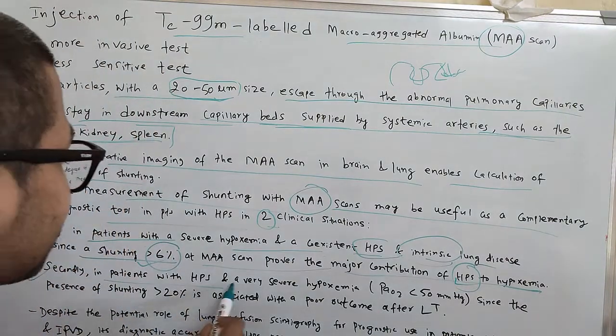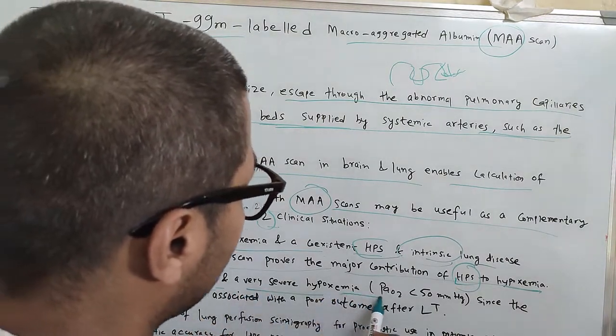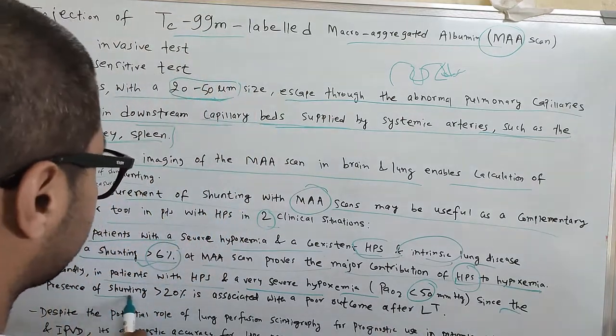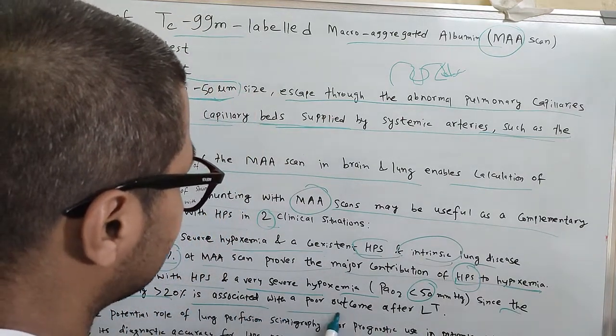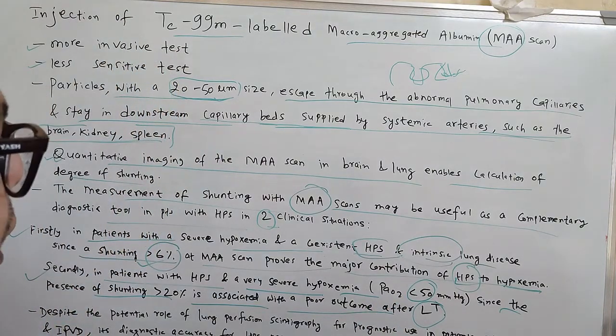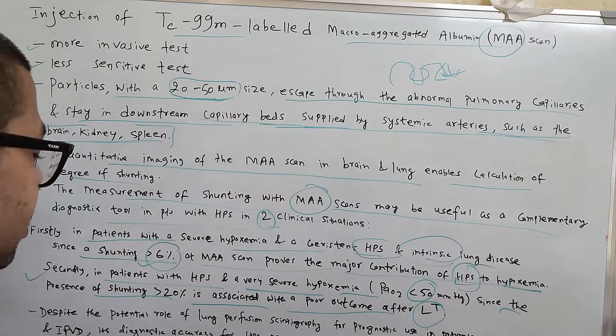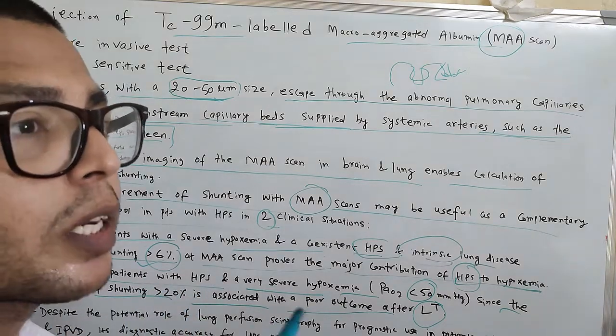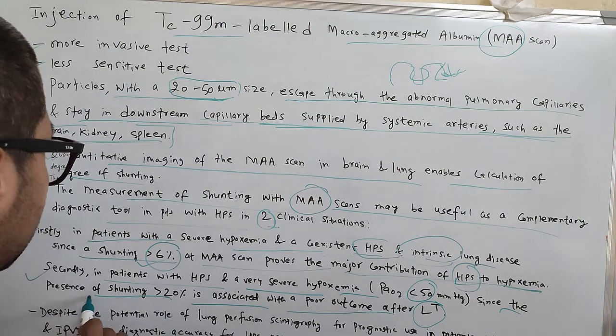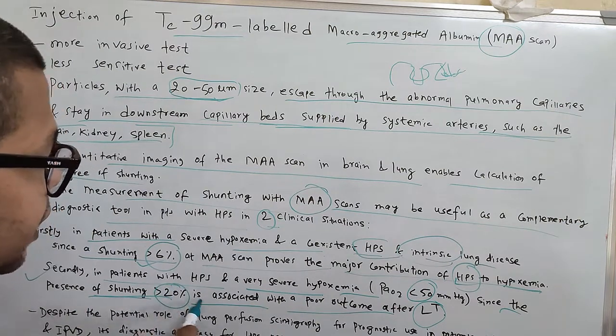Secondly, in patients with HPS and very severe hypoxemia less than 50 mmHg, the presence of shunting greater than 20% is associated with poor outcome after liver transplantation.